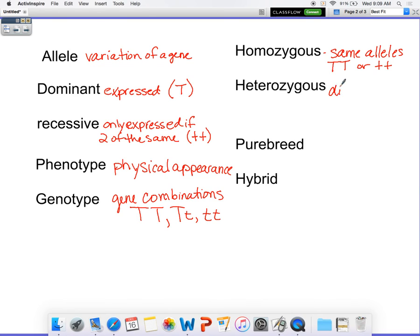Heterozygous are different. So you can only have big T, little t, for heterozygous. We have something that is also known as purebred. If they were purebred, they were homozygous. Either going to be homozygous dominant or homozygous recessive because they have the same alleles.